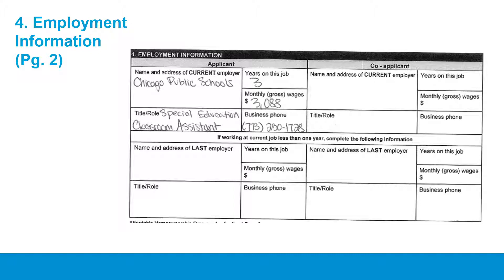Add an additional page if necessary. If you have been self-employed in any capacity in the past two years, please write the name and address of your business and write 'self-employed' in the name/address box. Please include all information requested for self-employment positions. The gross monthly wages for self-employment, even if estimated, should have business expenses subtracted from the total.